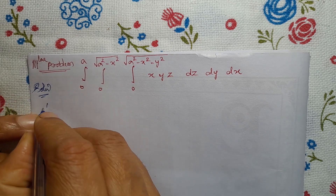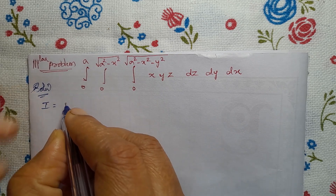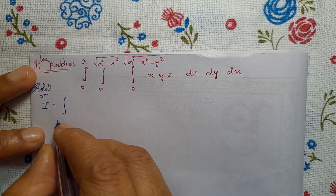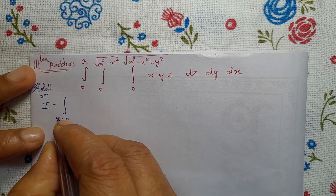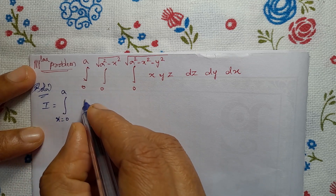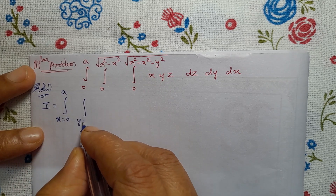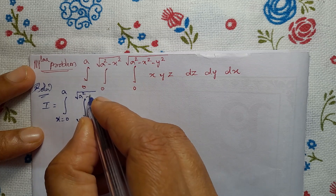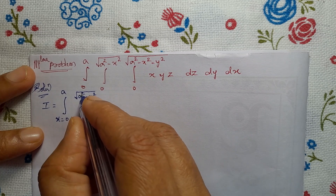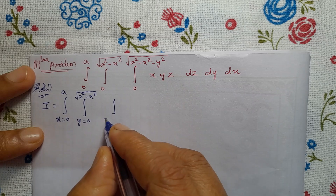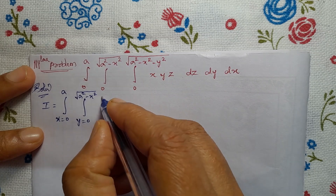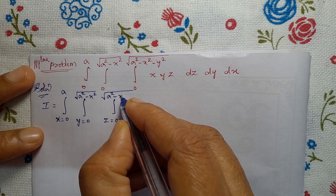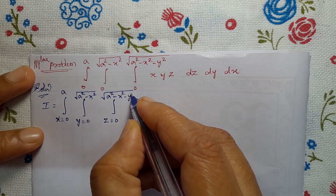I equals the triple integral with limit for X: X equal to 0 to A, integral of Y equal to 0 to square root of (A squared minus X squared), integral of Z equal to 0 to square root of (A squared minus X squared minus Y squared).